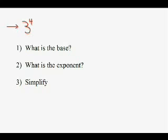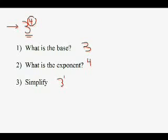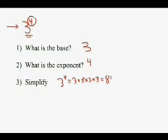Hopefully you were able to answer those three questions. In this case, the base is our big number — that is 3, the number that we're multiplying over and over again. The exponent is 4, the little number up here. And the way we say this math sentence is 3 to the power of 4. To simplify, we write 3 to the power of 4 as a repeated multiplication question: 3 times 3 times 3 times 3. The answer is 81. If that was the answer you got, congratulations — you have a firm understanding of how exponents work.